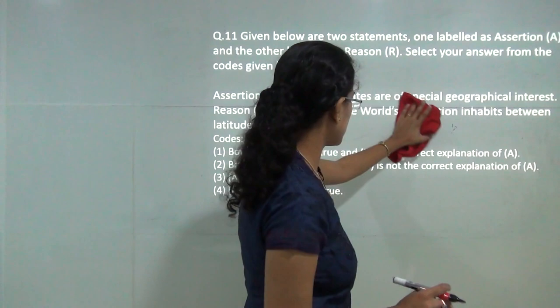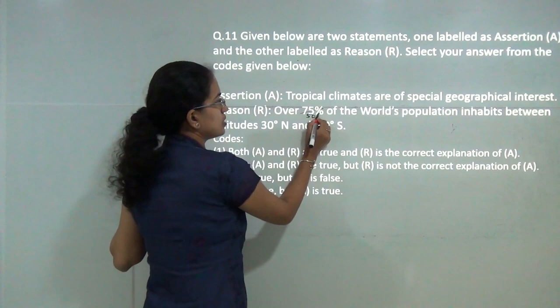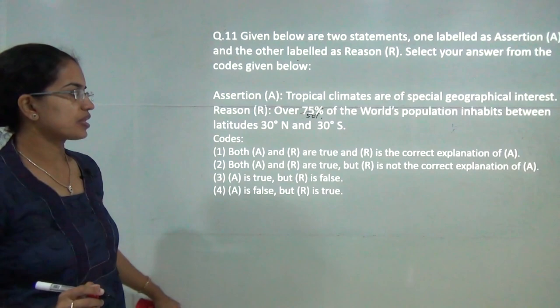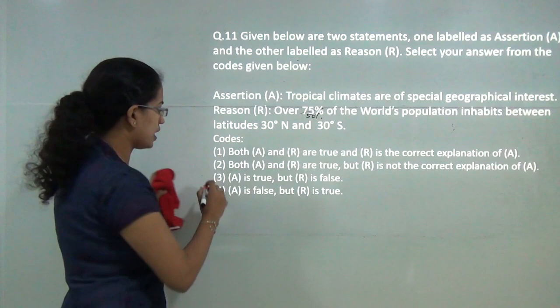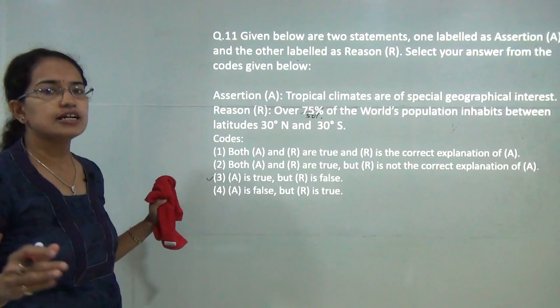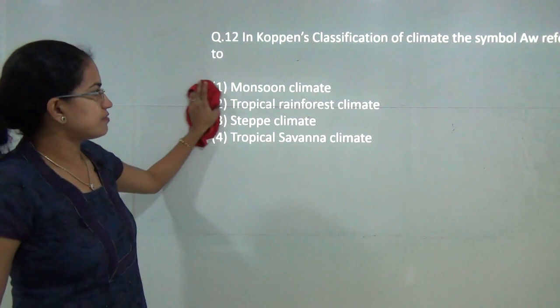Next, tropical climates are of special geographical interest, that is true, and over 50 percent of the world population lies between 30 degrees north and south. The reason is incorrect, assertion is correct. A is true, R is false, and nearly 75 percent of the population lie in the tropical lands. That is the correct answer.